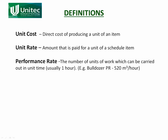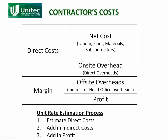The contractor's cost is made up of several components which can be broken down into direct costs and margin, also known as markup. Direct costs are the costs directly related to constructing the works. The first is net cost — labor, plant, materials, subcontractors — all the things required to actually do the work. In addition to that there's the on-site overhead, which includes supervision and the cost of vehicles moving everyone to site.